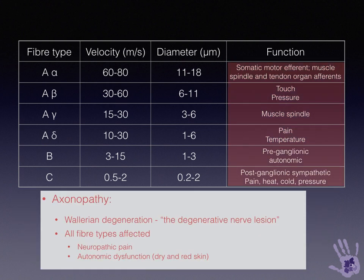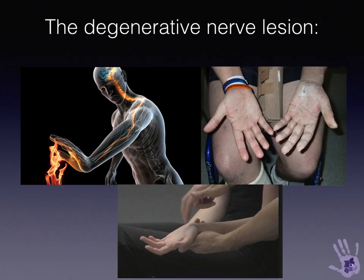When all the fibre subtypes are involved, it's usually indicative of an axonopathy, and there's usually neuropathic pain, autonomic dysfunction causing dry red skin due to vasodilation and loss of pseudomotor sweating function, and often a Tinel sign. The hallmarks of a degenerative nerve lesion are pain, dry skin with erythema, and a positive Tinel sign at the site of injury causing irritation in the distribution of the nerve.